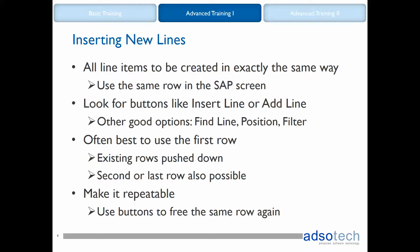Winshuttle is unable to create each new line item on the next row in the list, but it can lock on to one row and keep repeating defined actions there. This means we need to do some thinking in SAP to find a way to use the same row over and over again. Usually we can find a button of some kind to accomplish this — buttons like Insert Line or Add Line. Using the appropriate button will push the existing rows upward or downward on the screen and free up the same physical row on the visible list for another entry. Most often it's best to use the first row in the list, but it depends on the SAP transaction and the functionality of the button that we use.